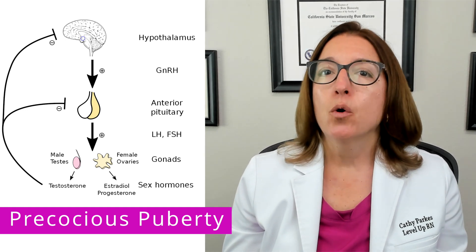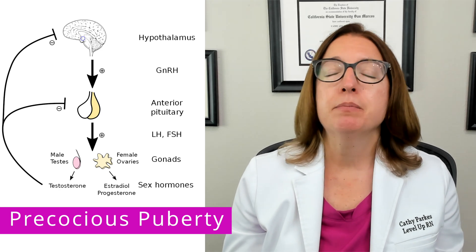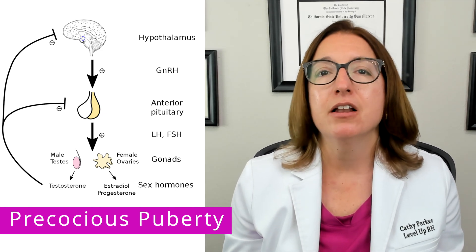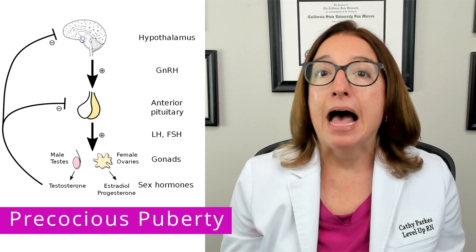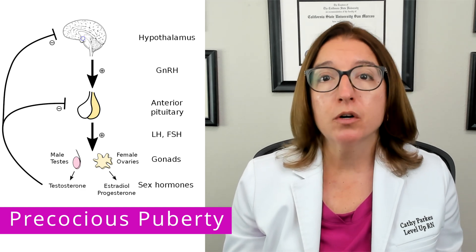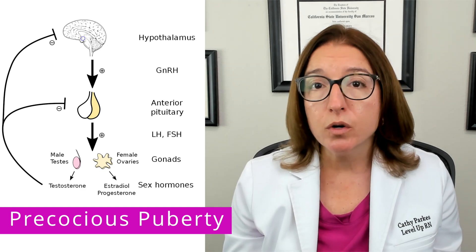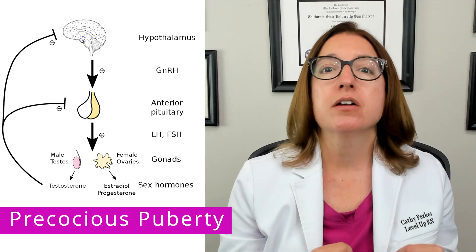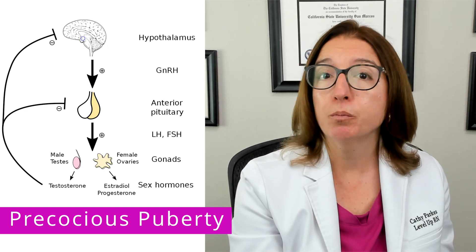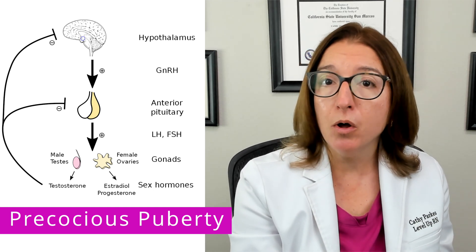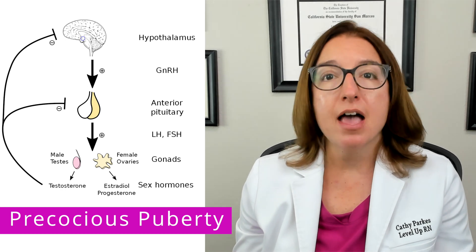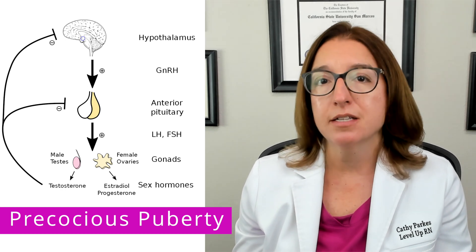Precocious puberty is typically idiopathic, meaning the cause is unknown. However, it may be caused by a tumor or other disorder that causes the early secretion of gonadotropin-releasing hormone, or the early secretion of estrogen or testosterone.